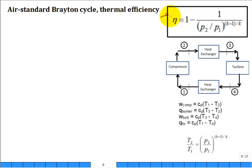For a cold air ideal Brayton cycle, the thermal efficiency is only a function of the pressure ratio, P2 over P1, and K, the ratio of specific heats.